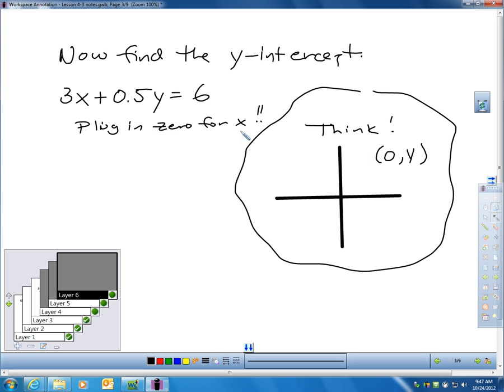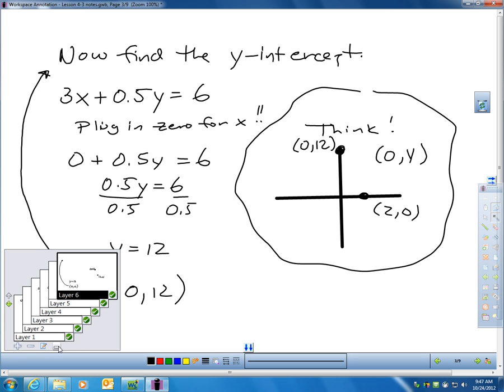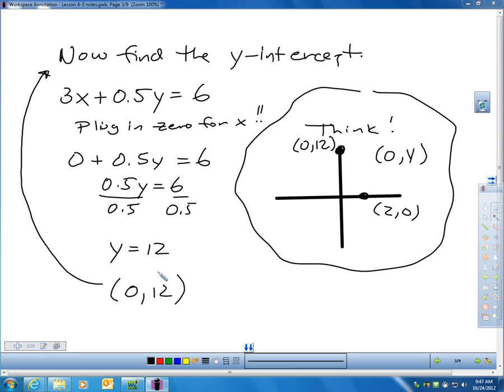So I'll do that. I'll plug in a 0 for X. That gives me 0.5y = 6. Which means I have 0.5y = 6. I can divide each side by 0.5. And I just found out that y is 12. Which means my Y intercept must have been the point (0, 12).